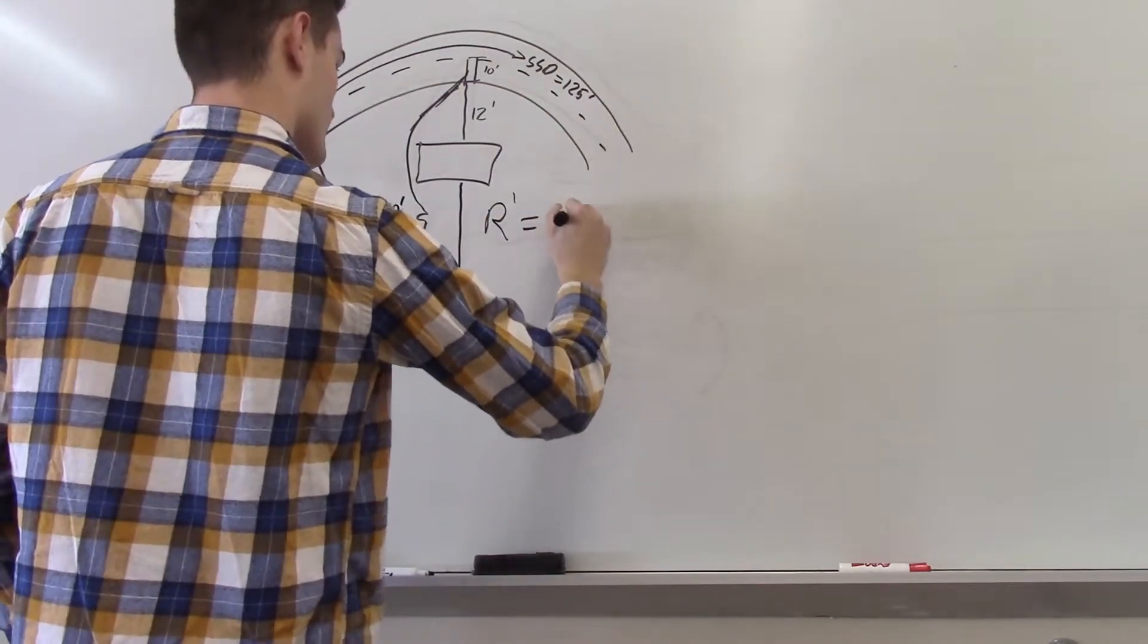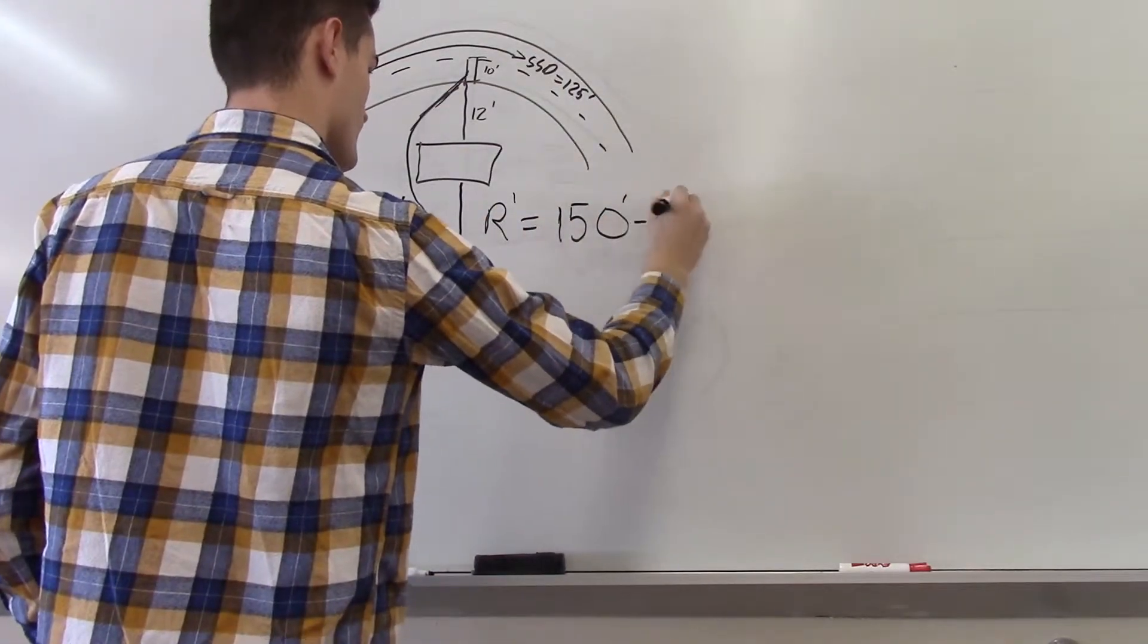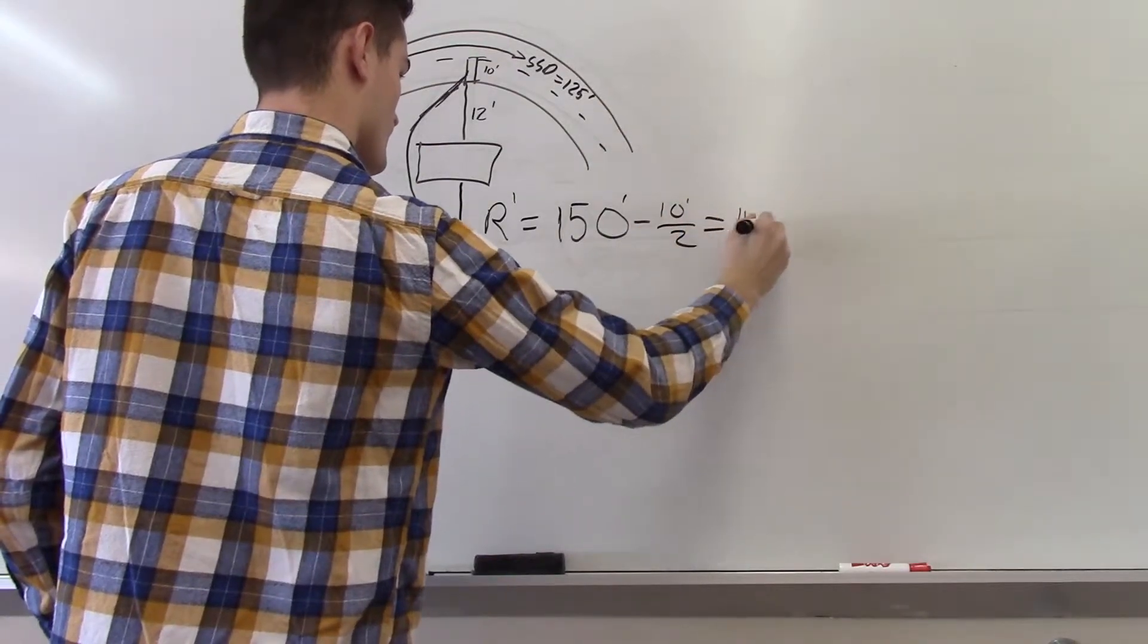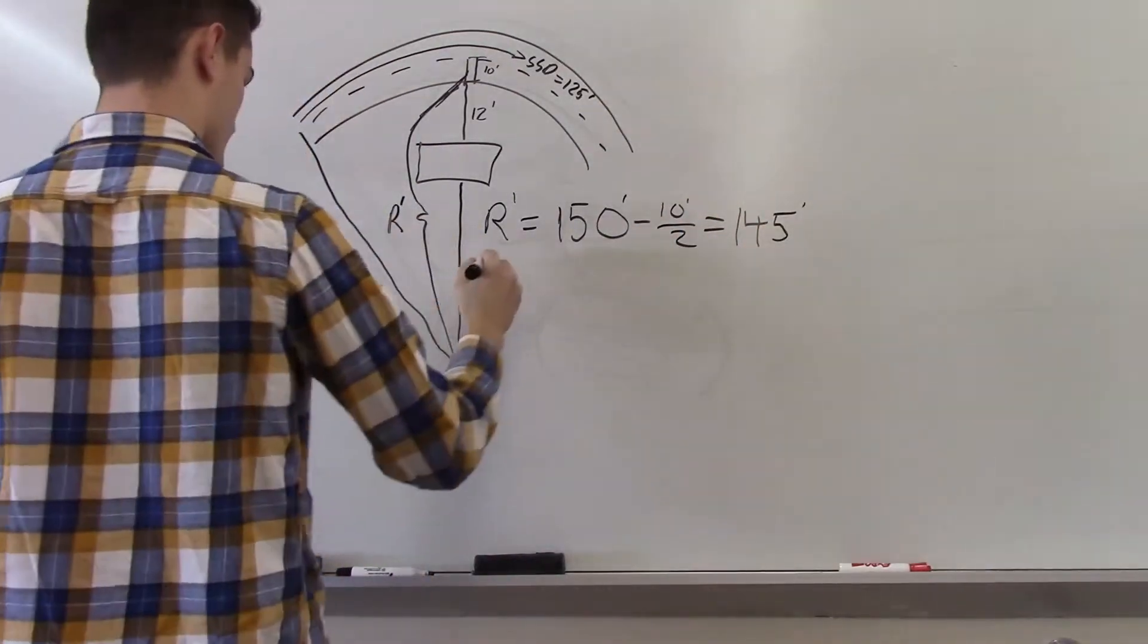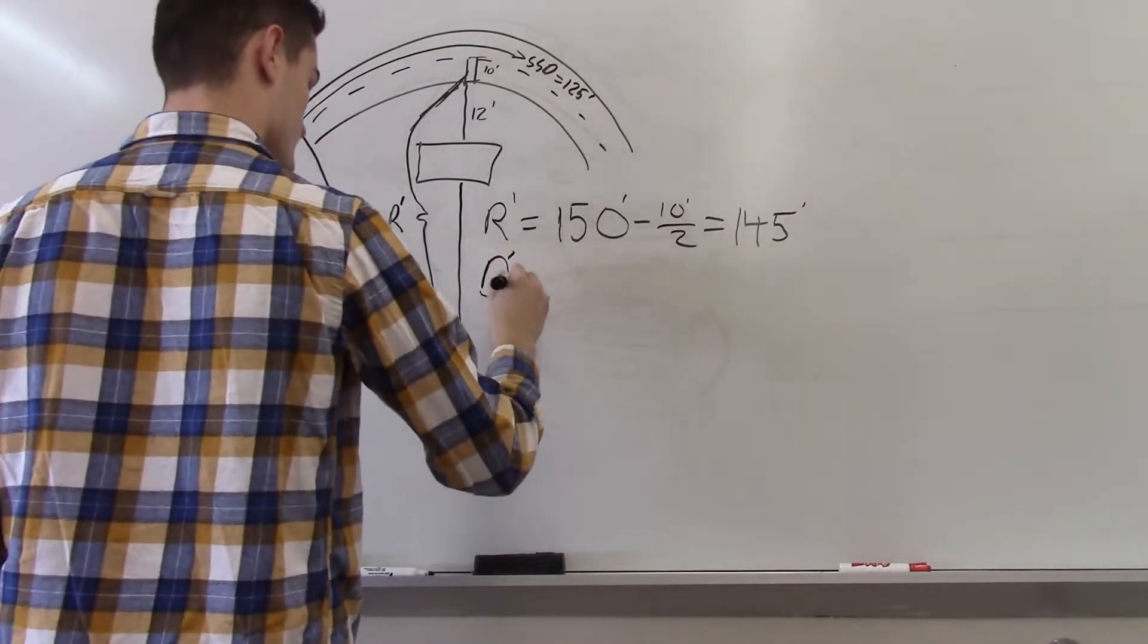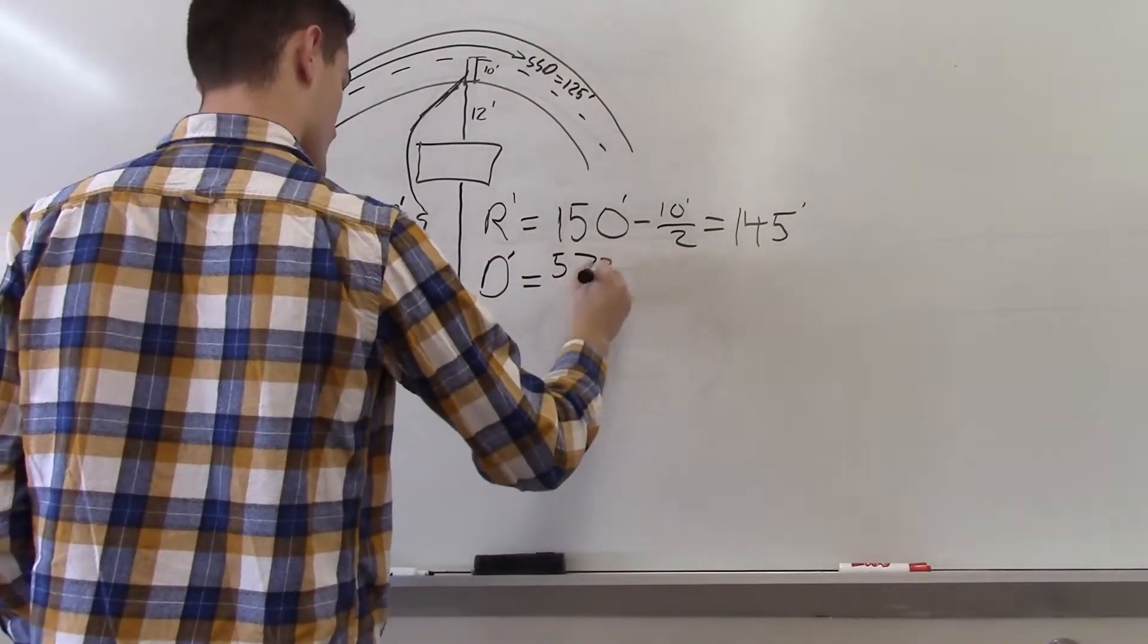The radius of the curve is measured from the center point of the imaginary circle to the center line of the road. Since we are looking at stopping sight distance for a curve, the radius will be measured to the center of the inside lane of the curve.